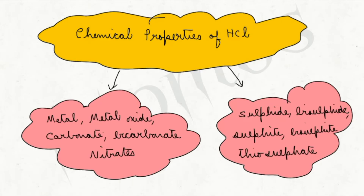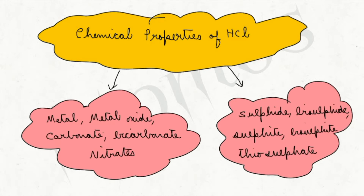Hi dears, this is Raji. We are learning the chapter hydrogen chloride. In this chapter we need to learn the chemical properties of hydrochloric acid - how hydrochloric acid will be reacting with various compounds, what will be the products of the reaction, and their observations which will also be asked in the exam. In this video we are going to discuss the reaction of hydrochloric acid with metal, metal oxide, carbonate, bicarbonate and nitrates. At the end of the video I have kept board questions related to this topic.